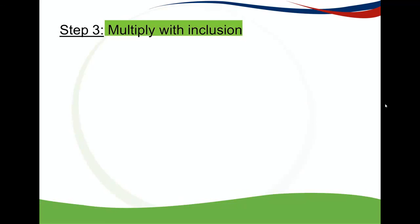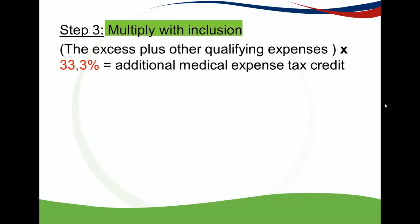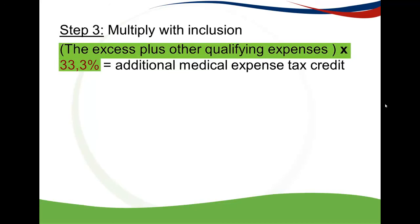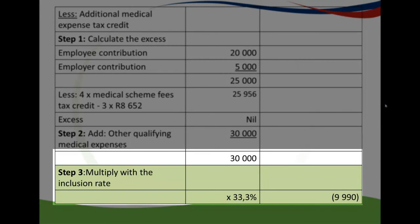Step three is to multiply by the inclusion rate. This is a little easier than Part 1, which requires applying a limitation that can be confusing. Here you simply take your excess plus your other qualifying expenses and multiply by 33.3%, or divide by 3, to get your additional medical expense tax credit. So we take 30,000 Rand and multiply by 33.3%, giving an additional medical expense tax credit of 9,990 Rand.